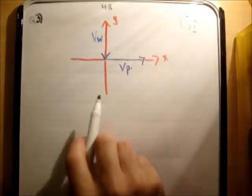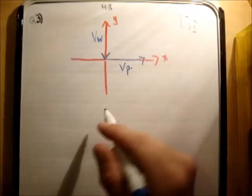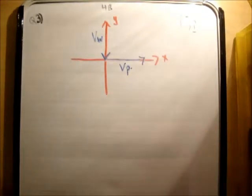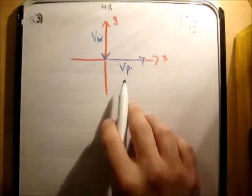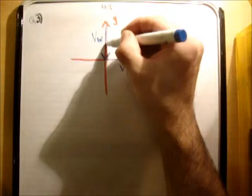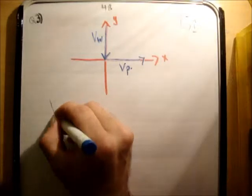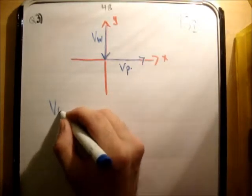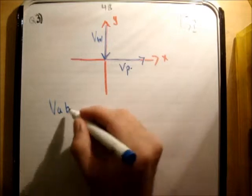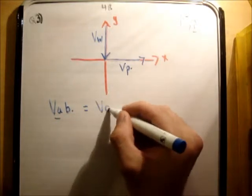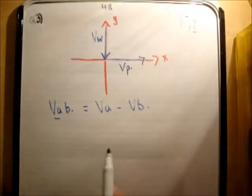Now, why would you say it's not the velocity of the plane relative to the wind? The reason is because the plane is physically flying due east. So because of that reason, you say it is the velocity of the plane. So the two things we know so far is the velocity of the wind and the velocity of the plane. The next thing we need to do is work out the velocity of the plane relative to the wind. Alright, so if we have VAB, that mathematically is just VA minus VB.